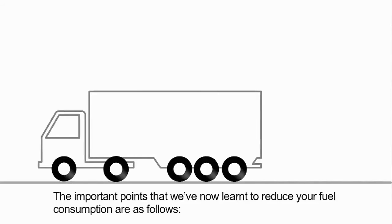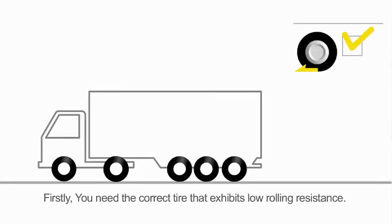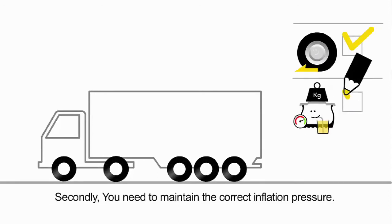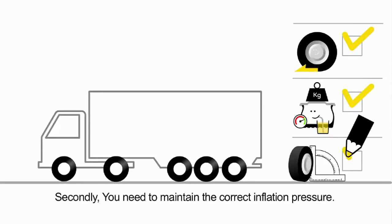The important points that we've now learned in order to reduce your fuel consumption are as follows. Firstly, you need the correct tire that exhibits low rolling resistance. Secondly, you need to maintain the correct inflation pressure. Thirdly, to maintain the correct wheel alignment setting.